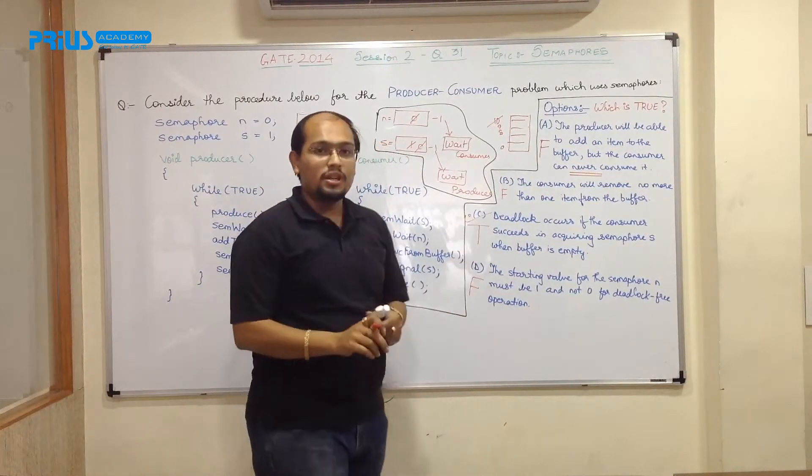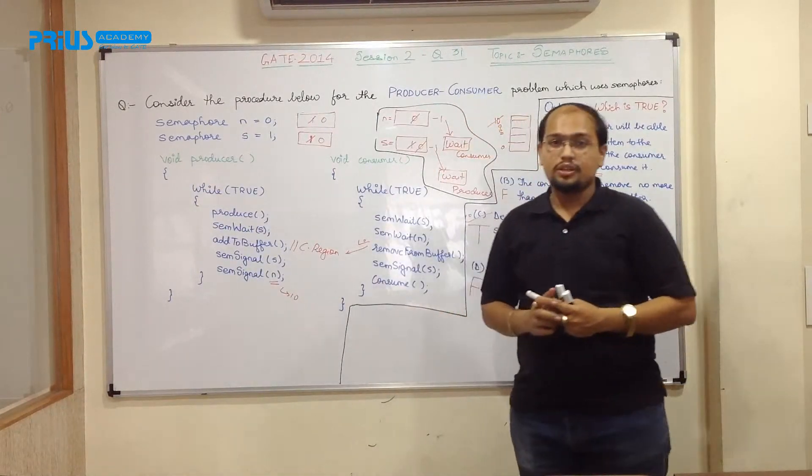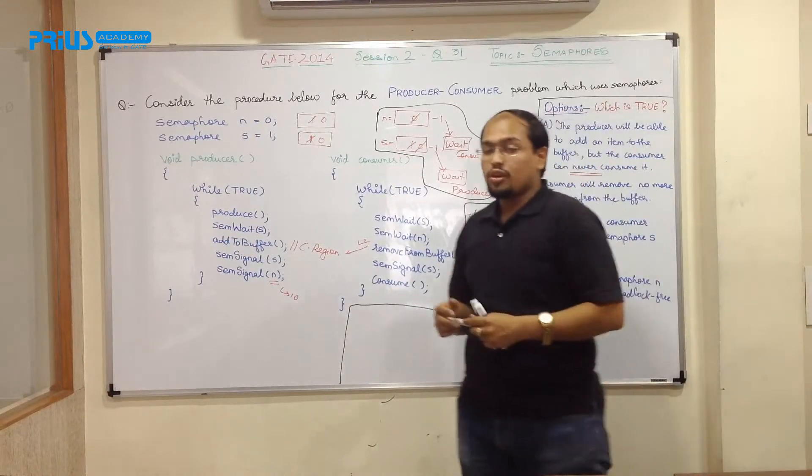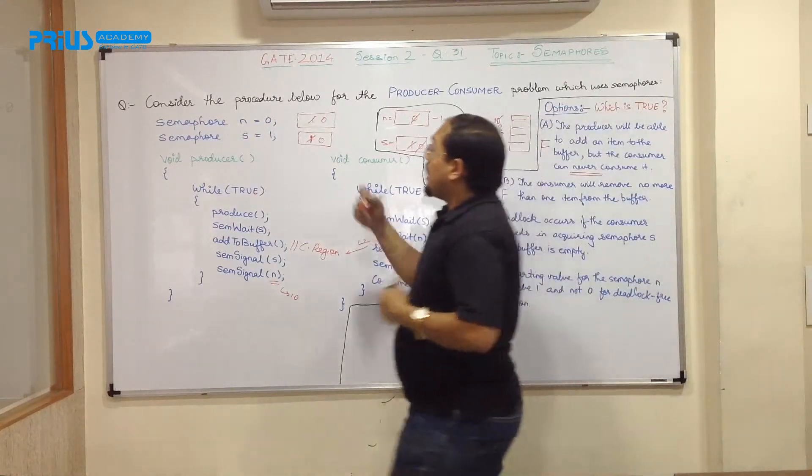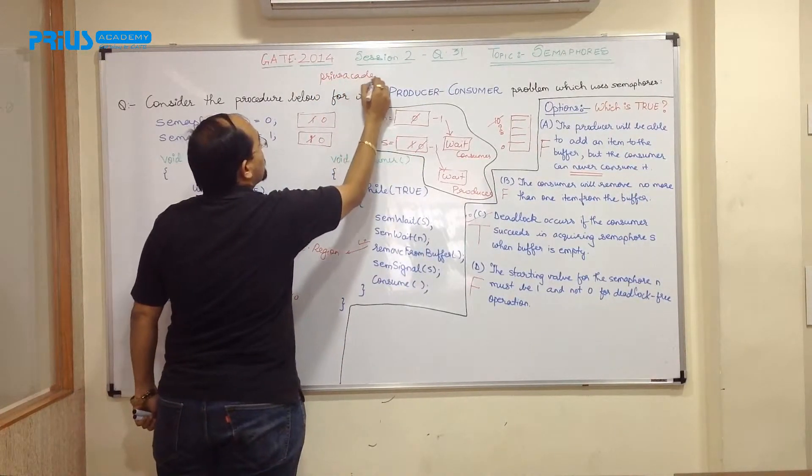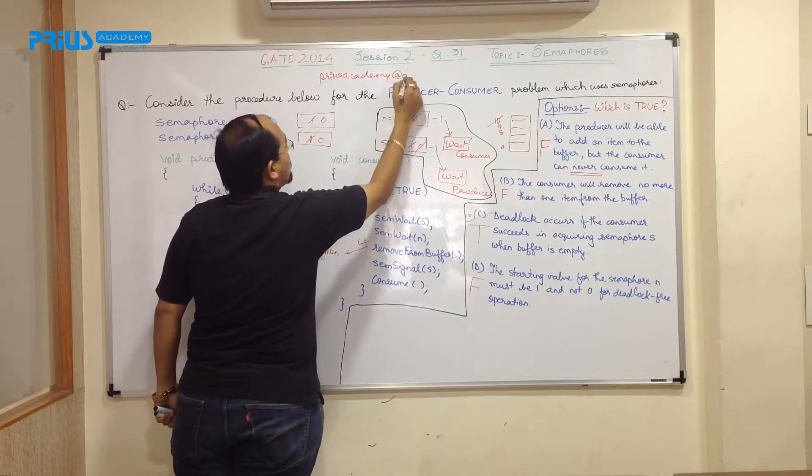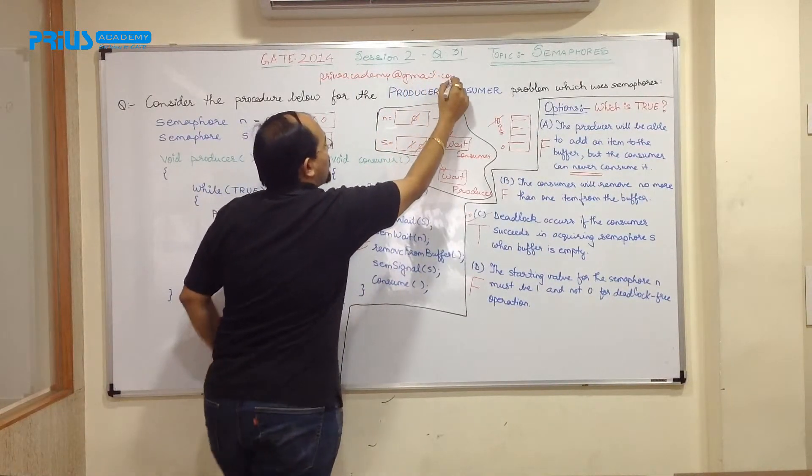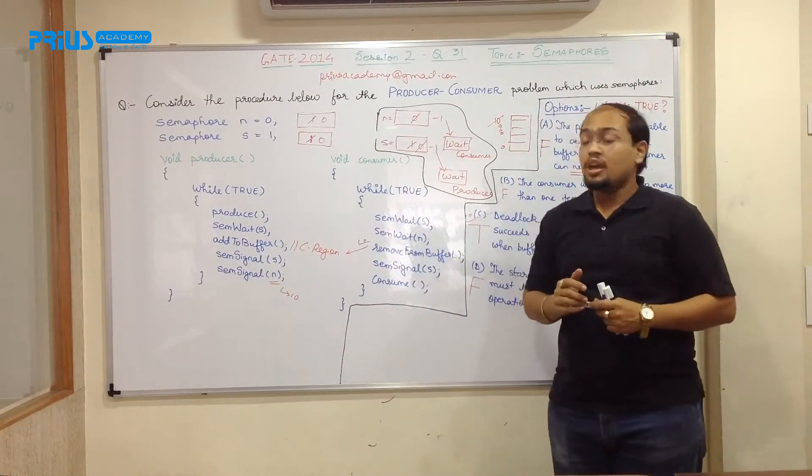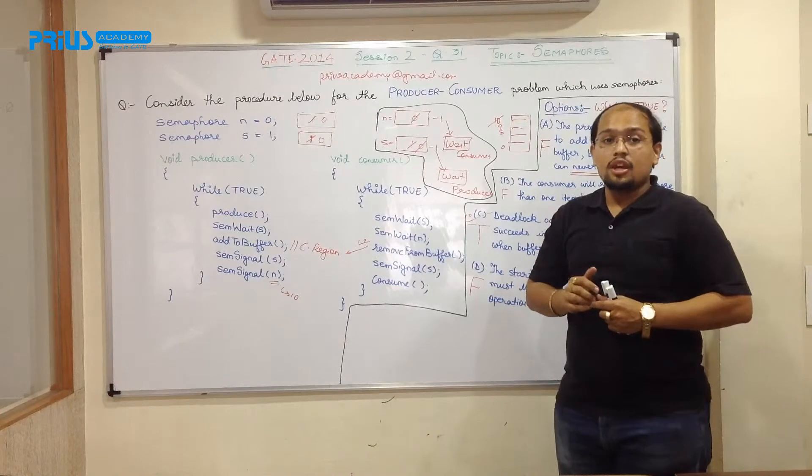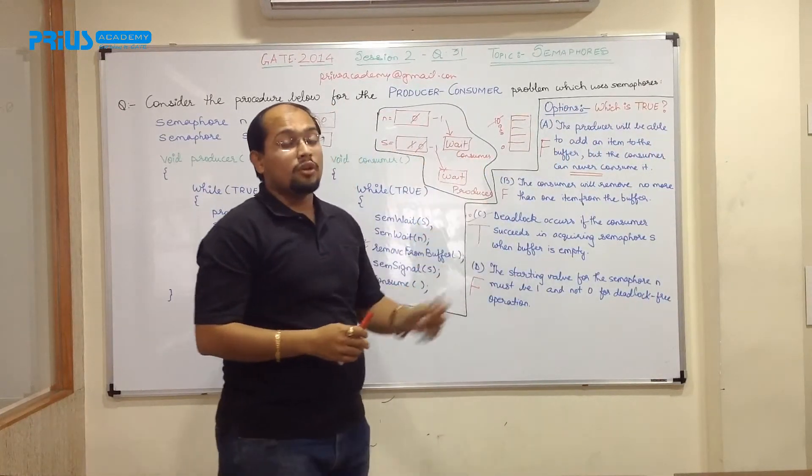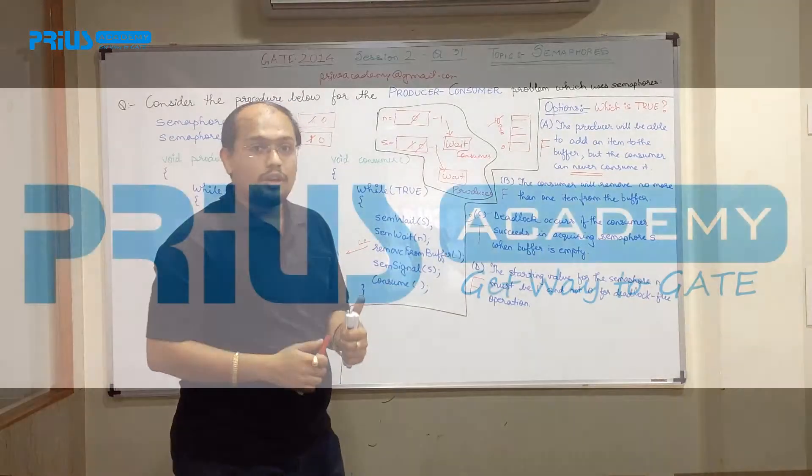So your correct answer is option C. I hope this was very clear to you. In case if you have any query, you can go through the books or you can even mail me again. The email ID as we have discussed last time is priusacademy at gmail.com. Also, you can post some comments if you want, like you can give your own feedbacks, you can share it with your friends and you can again ask me any other topic if you want. And I will try my best to give you a video solution for that. Hope this was useful for you. All the best.